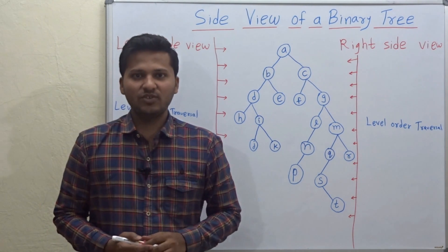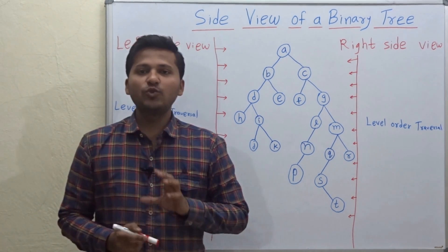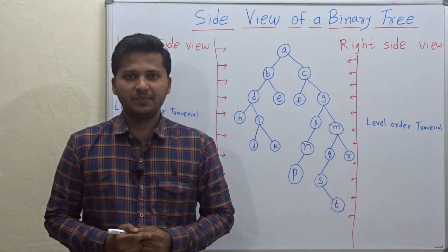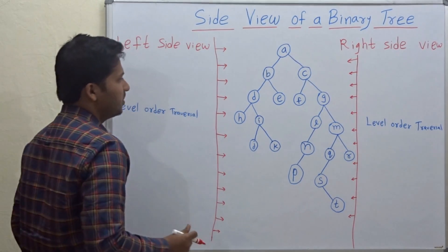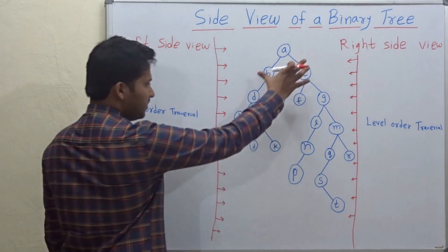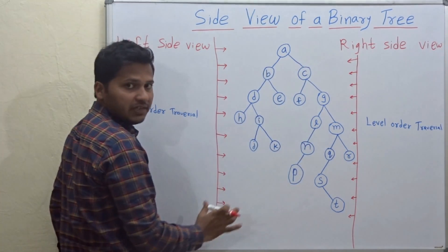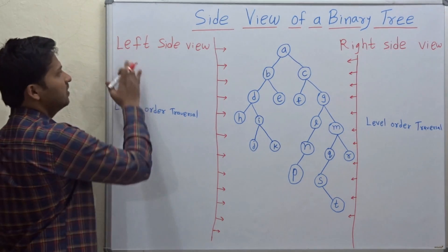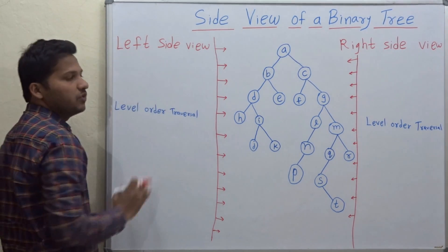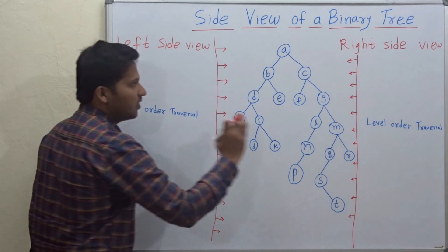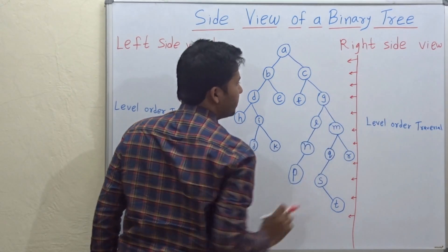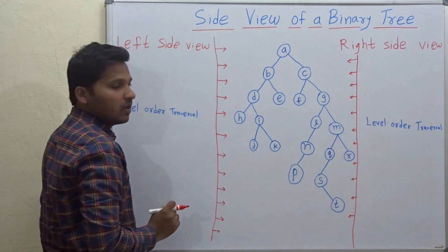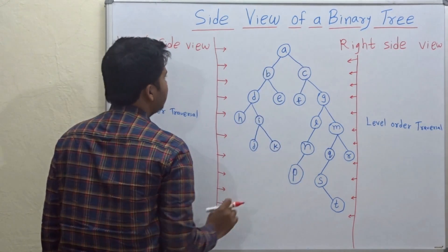Hello friends, today we are going to see how to print the side view of a tree. This is a binary tree, and on the left side we are going to print the left side view, and on the right side we are going to print the right side view.